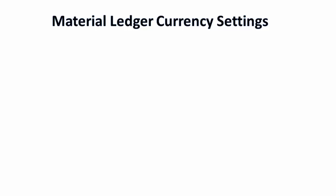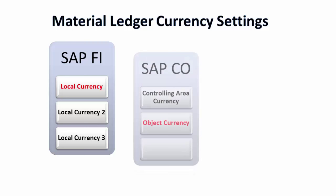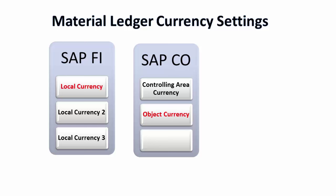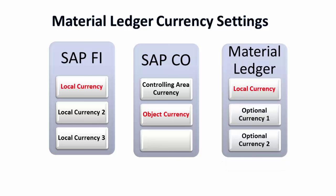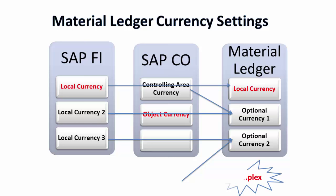Now let's look at material ledger and its currency studies. As you get three currencies in Finance, there are two currencies in the controlling area — controlling area currency and object currency, which is normally the company code currency. In material ledger you have local currency, and the optional currency can be controlling area currency, local currency two, local currency three, or a different currency. Overall, material ledger valuation currency settings are a little complex in the current non-S/4 HANA scenario.